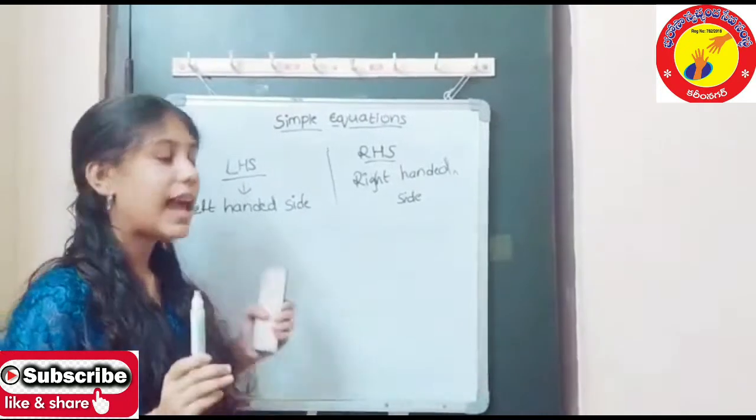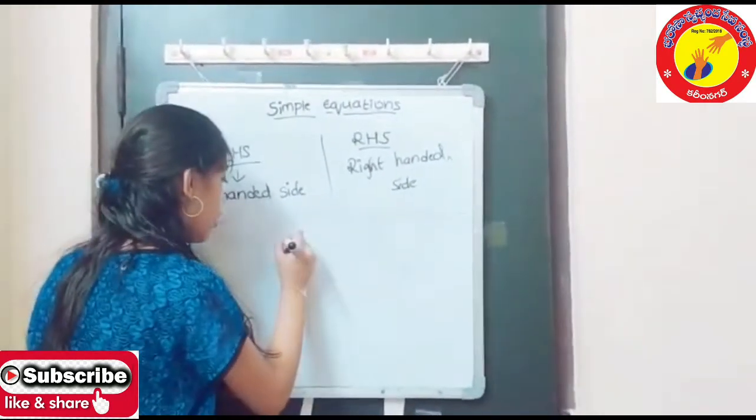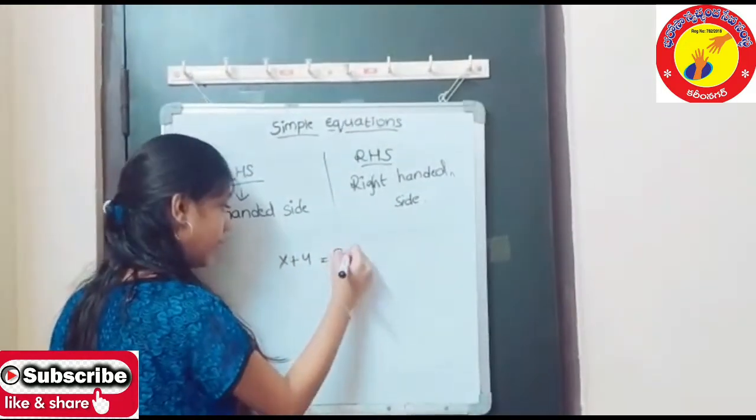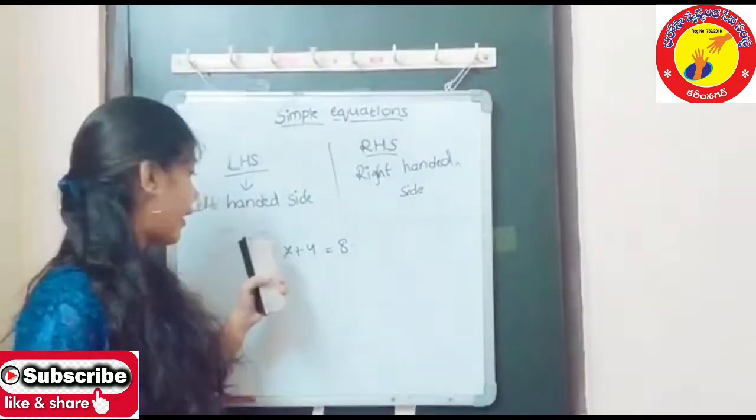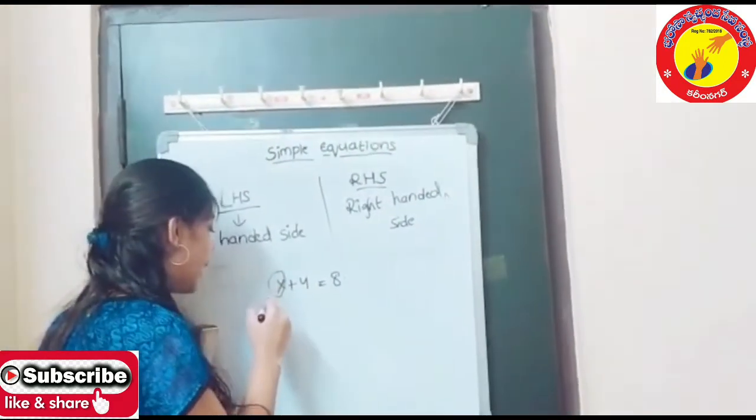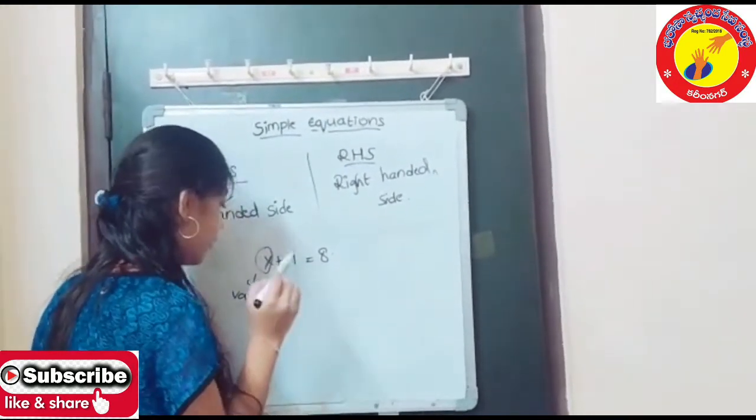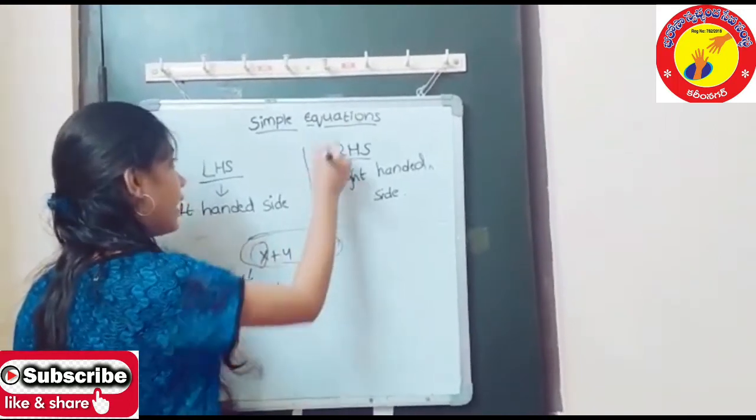LHS and RHS we use in our equation, let me show you. I am taking an example of X plus 4 is equals to 8. Here we should find the X. Here we call X has variable, and this whole part we call as equation.